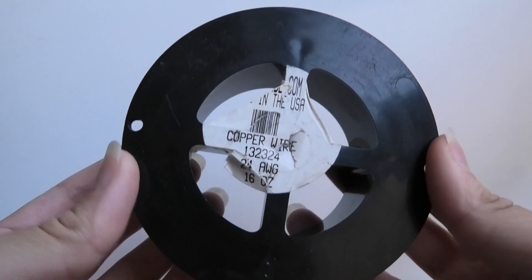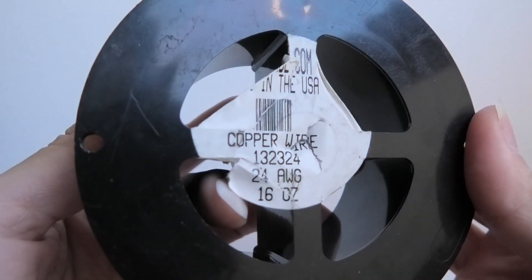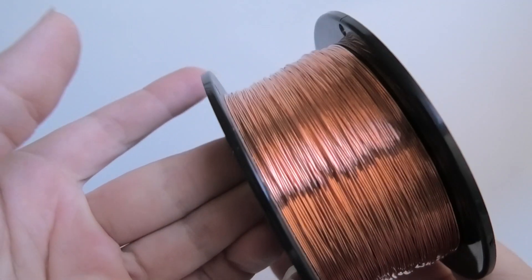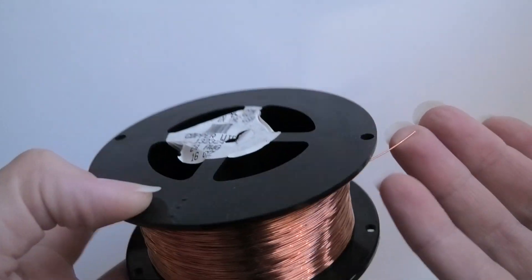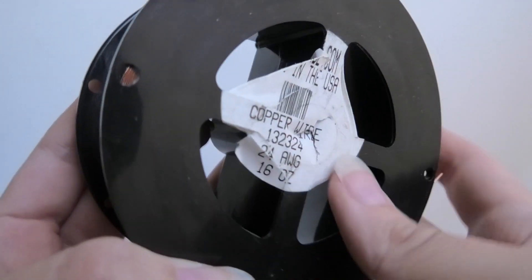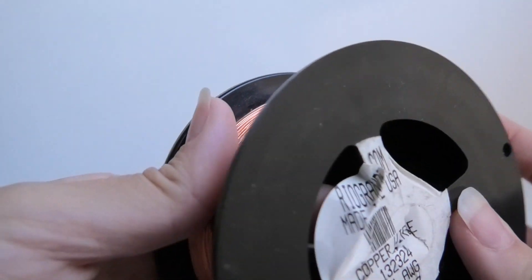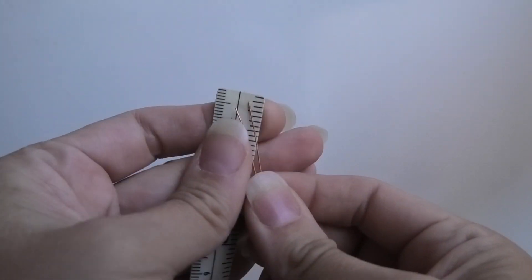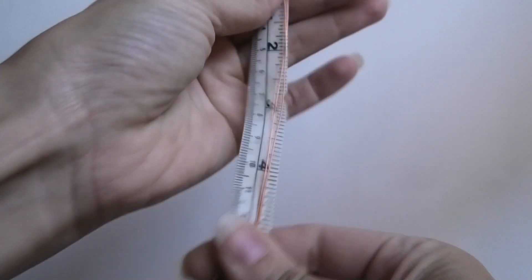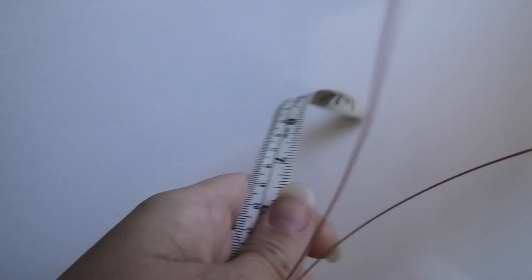Alright, so let's get started. The wire we're going to be using is 24 gauge round copper wire. This is dead soft wire, and I got this spool from RioGrande.com. You're going to need two pieces of it. It's a pretty thin little wire as you can see here, and mine are 17 inches long.